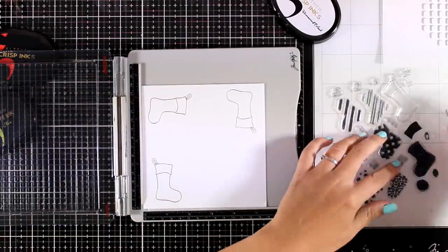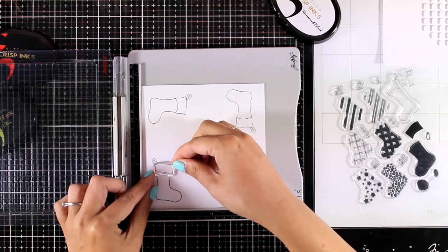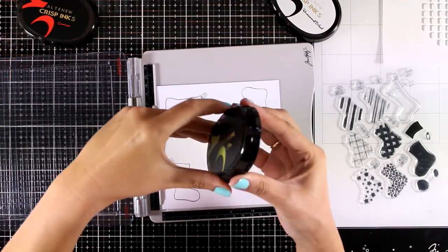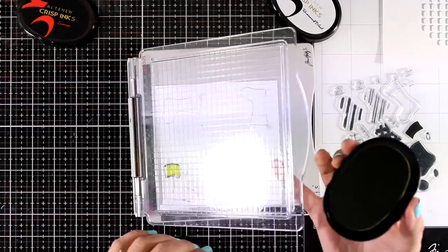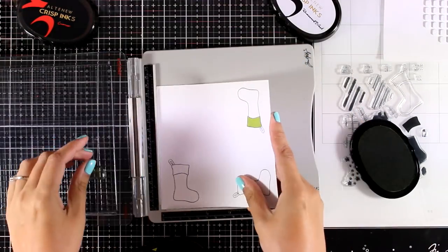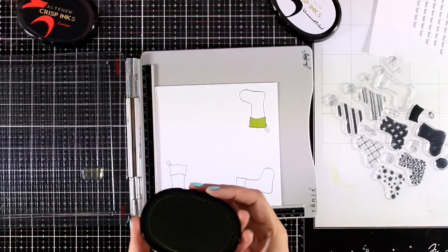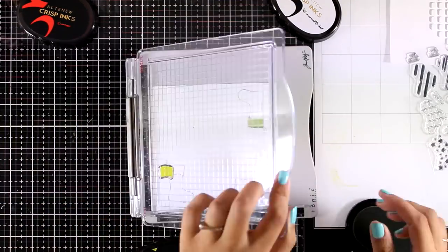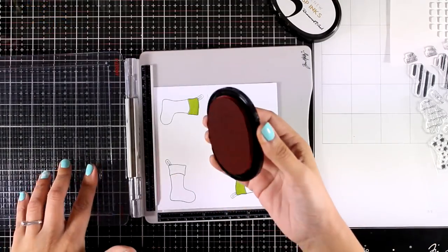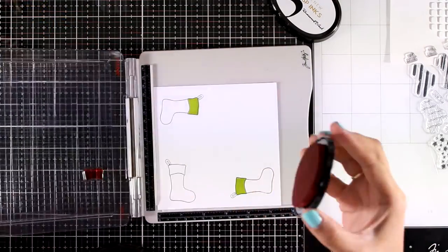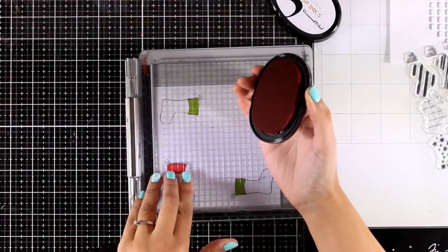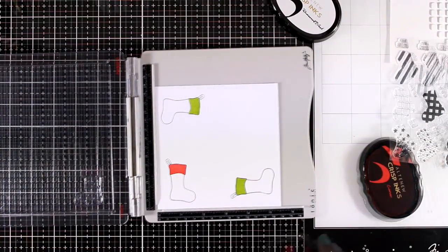And now I can go ahead and start stamping the inside and I'm going to mix and match all those different stamps together to create three different stockings. But at the same time I want to keep everything quite traditional in terms of colors, so I will stamp everything just by using two colors. The red one is called Crimson and the green one is called Olive, they are both by Altenew.